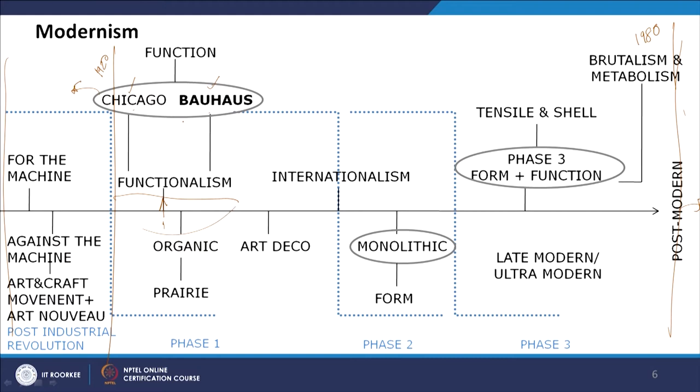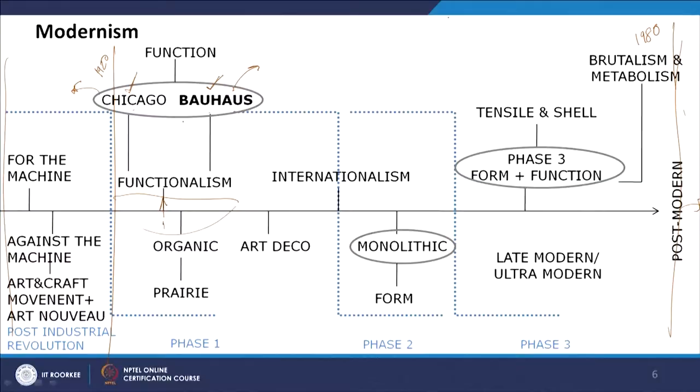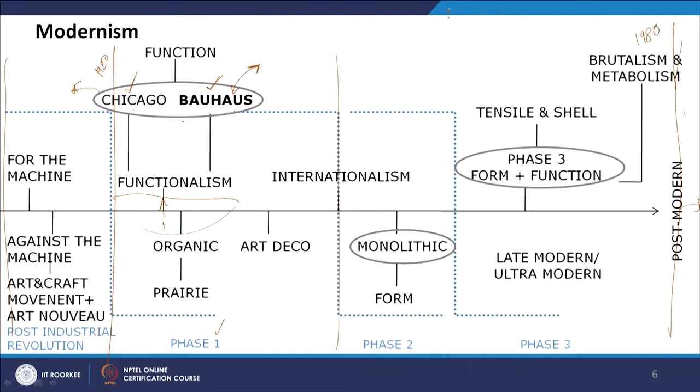Within functionalism there are two different movements, just as there were two against-the-machine movements. Bauhaus was more European and the Chicago School started in the USA. They share similarities in thought process but also have dissimilarities in visual style and form. We will discuss Bauhaus as part of the functionalist movement, and in the next class discuss De Stijl — a parallel movement in fine arts that goes hand in hand with Bauhaus, with similar visual palettes and thought processes.